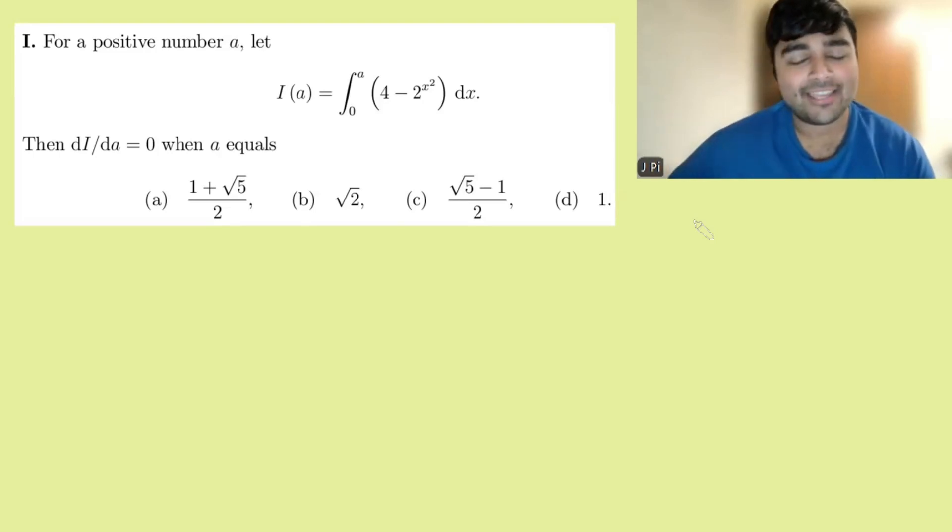For a positive number a, I(a) equals the integral from 0 to a of (4 - 2^(x²))dx. Then dI/da equals 0 when a equals which of these four values?